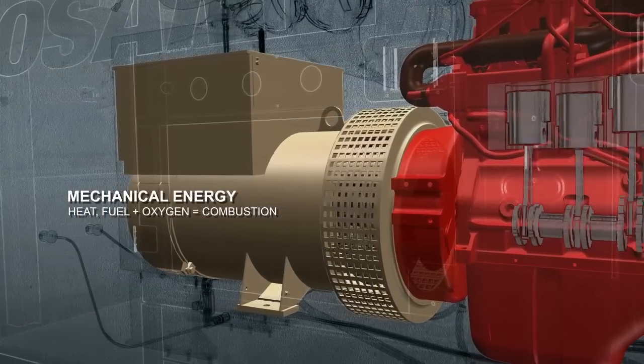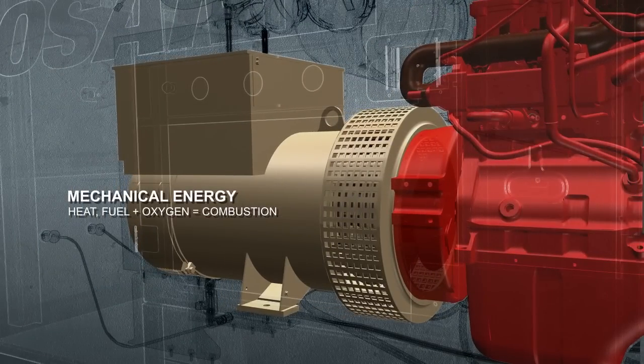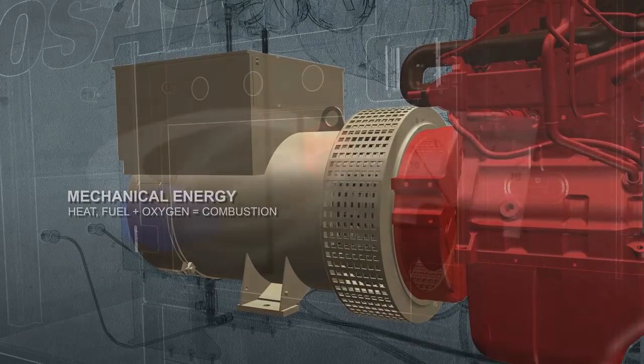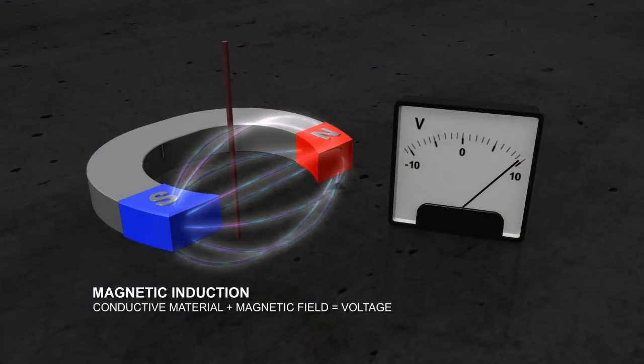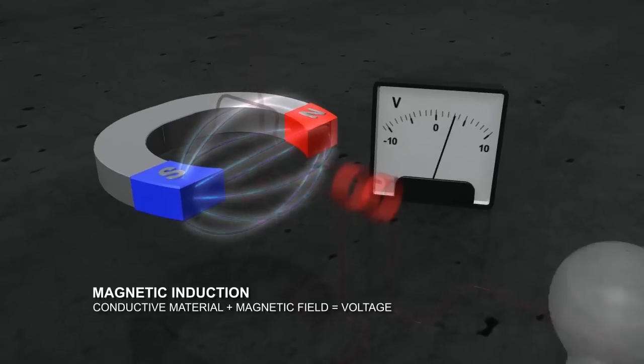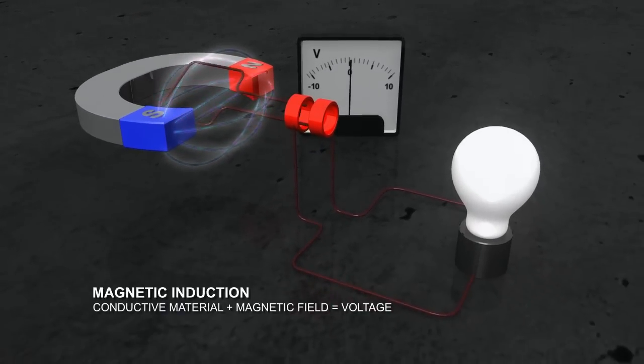An alternator converts mechanical power into electrical energy in a process called magnetic induction. Magnetic induction occurs when a conductive material such as a copper wire passes through a magnetic field and voltage is produced. If the wire is connected in a complete circuit, the power can be transmitted.